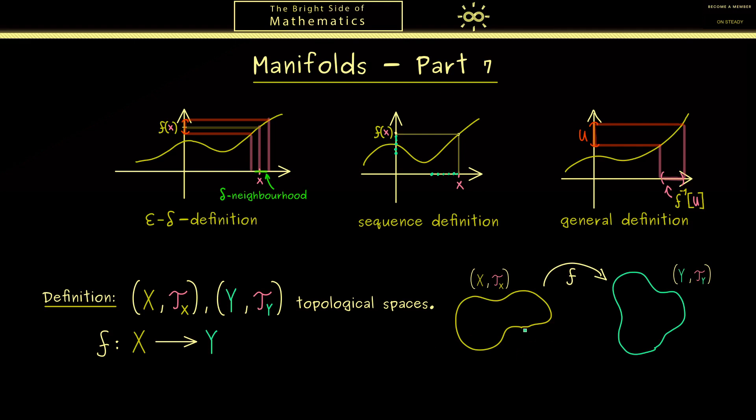For example, we don't just have the set X here but also the topology Tx which gives meaning to neighborhoods of points. And now when we want that the map f conserves this structure, we reach the term continuity. So visually speaking, this means here on the left hand side when we have points that are close, then the map f should map them to points that are also close.